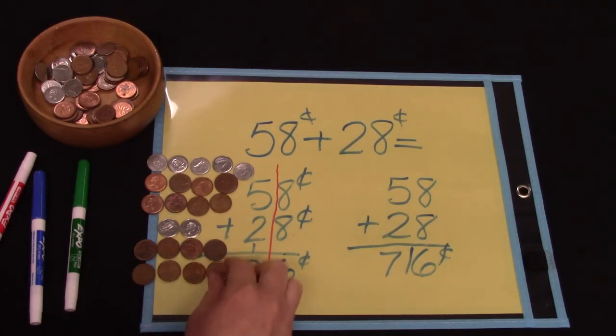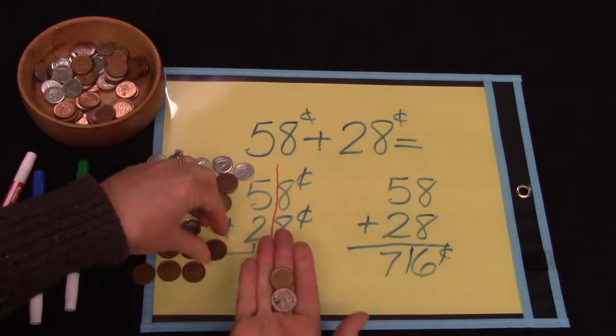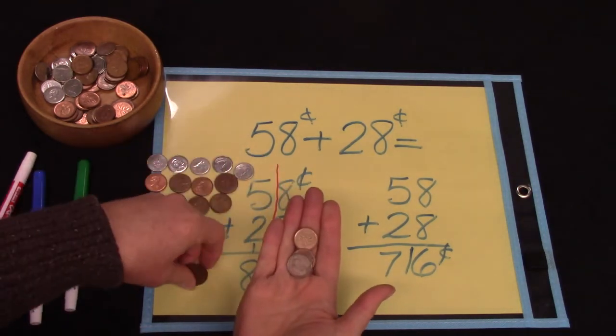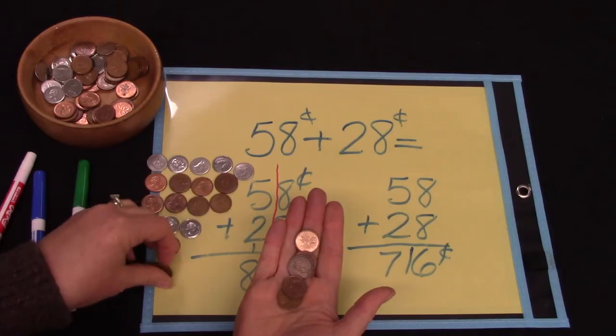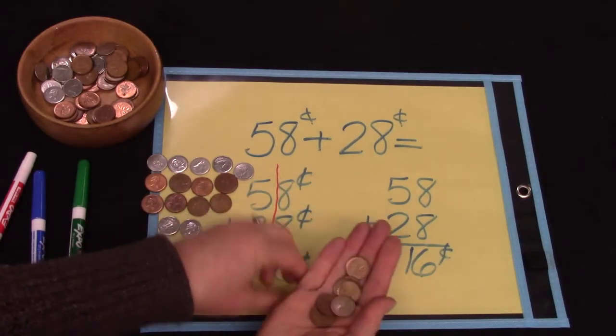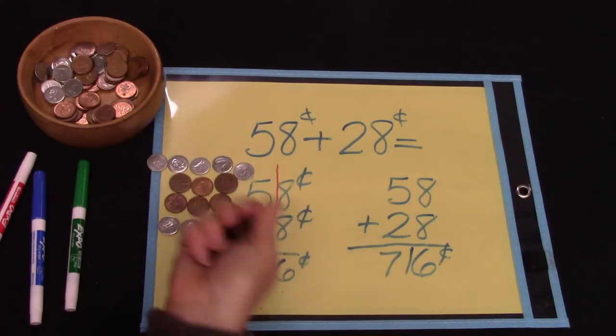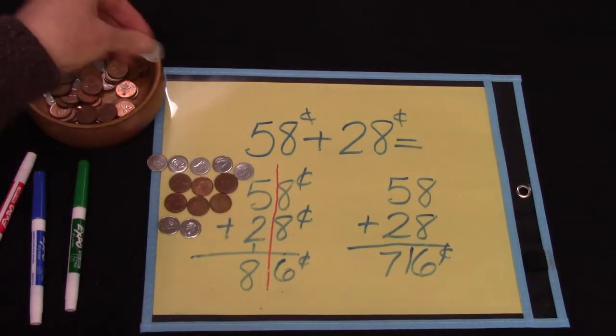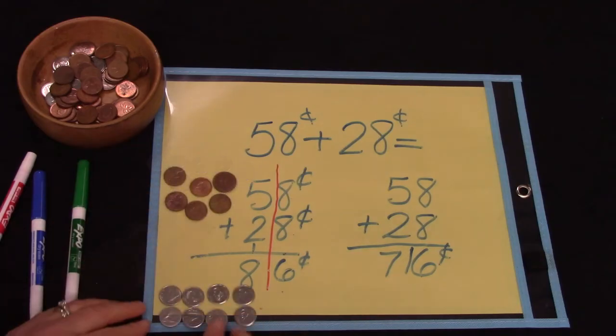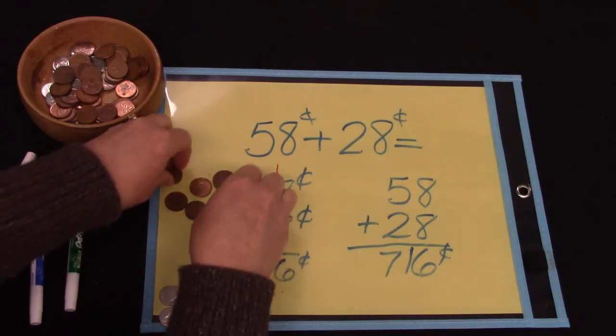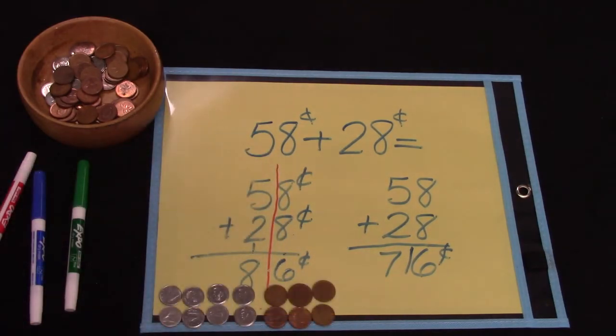It's because we can take 10: 1, 2, 3, 4, 5, 6, 7, 8, 9, 10 and trade those in for a dime. That gives us 8 dimes and 6 pennies. So don't forget we can't put two numbers in one column.